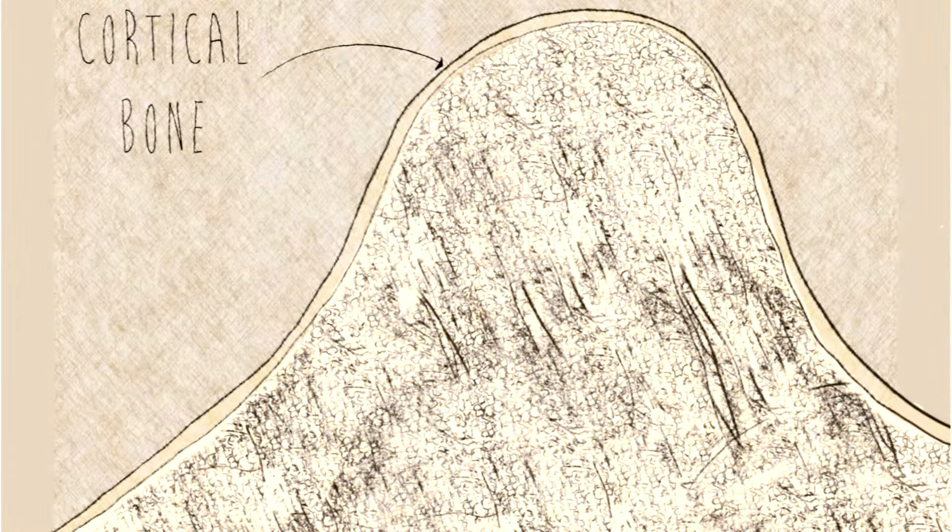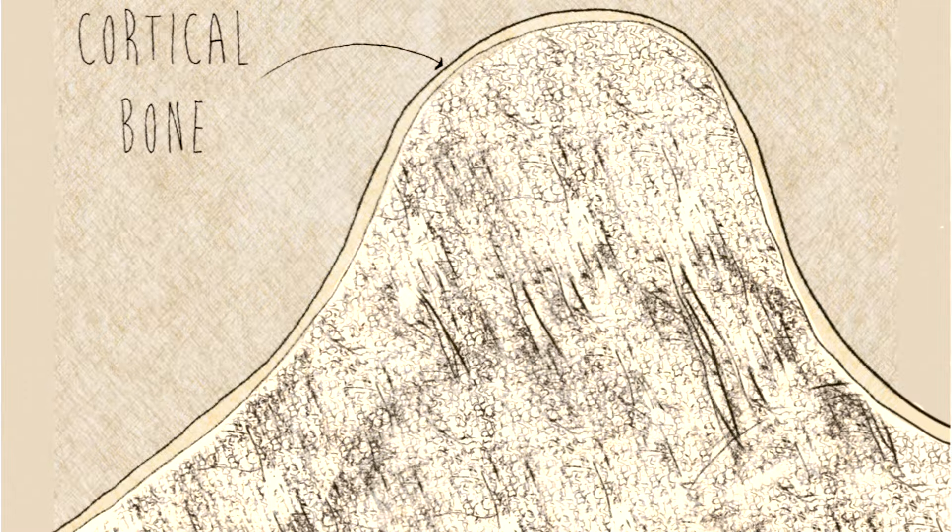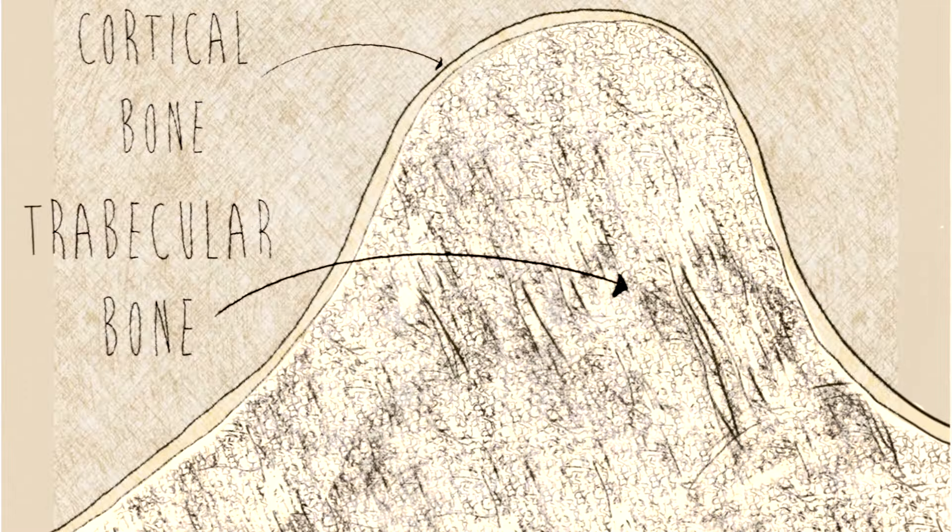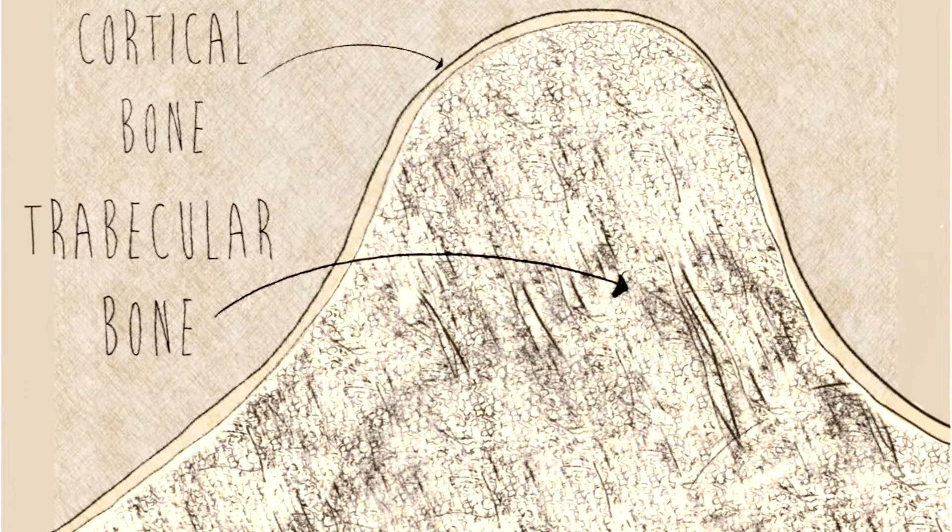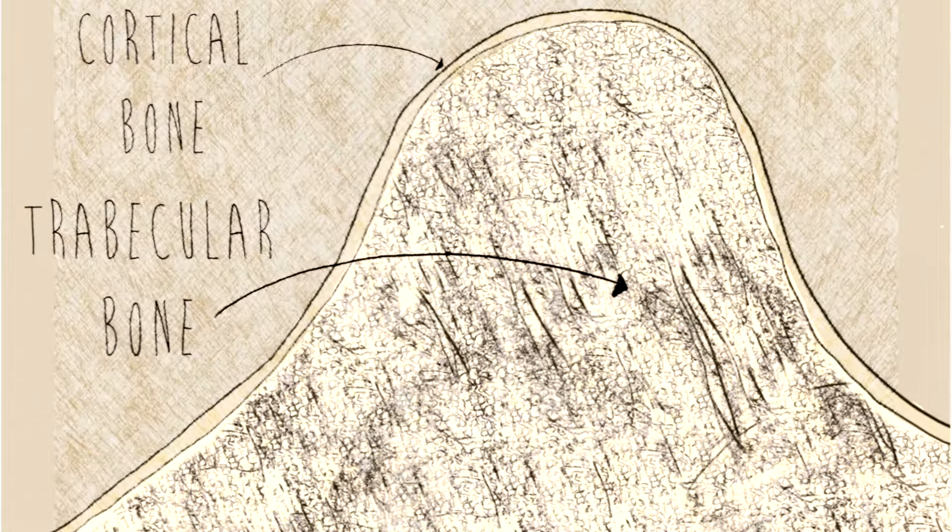Instead, only the outside cortical bone is solid with just a few small canals. The inside of the bone contains trabecular bone, which is like scaffolding or honeycomb. The spaces between are filled with fluid bone marrow cells.